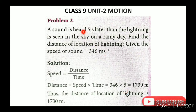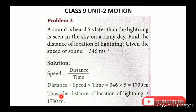Time equals 5 seconds. Distance equals speed of sound multiplied by time equals 340 × 5 = 1730 meters. That is the distance of the location of the lightning — 1730 meters.